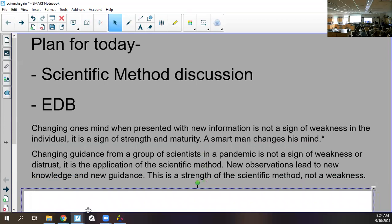This is where it gets controversial. Changing guidance from scientists in a pandemic is not a sign of weakness, distrust, or stupidity. It is the application of the scientific method. New observations lead to new knowledge and new guidance. This is a strength of the scientific method, not a weakness. In the last two years, I can't believe how many people have stopped trusting science.